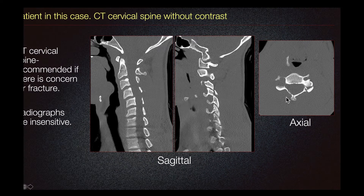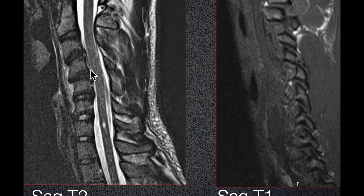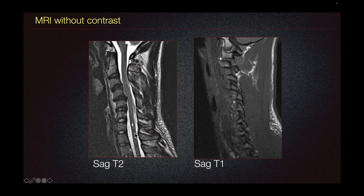The patient underwent MRI without contrast. Here we can see some disc bulge at C3-C4, and also the anterior listhesis of C4 over C5 with uncovering of the disc at this level. There is also mass effect on the anterior thecal sac and the anterior aspect of the spinal cord at this level. No abnormal cord signal is detected. Additionally, there is an incidental note of a focal syringomyelia at the level of C7.